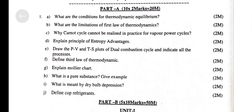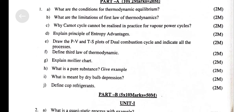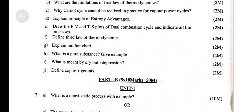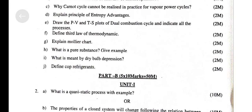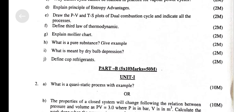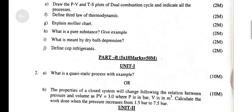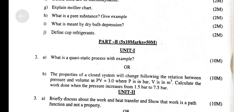Part A — 2 marks questions. What are the conditions for thermodynamic equilibrium? What are the limitations for the first law of thermodynamics? Why can the Carnot cycle not be realized in practice? What are the conditions for vapor power cycles? Explain the Principle of Entropy. Draw the PV and TS plot of the dual combustion cycle and indicate all the processes. Define the third law of thermodynamics. Explain the Mollier chart. What is a pure substance? Give an example. What is meant by dry bulb depression? Define coefficient of performance.